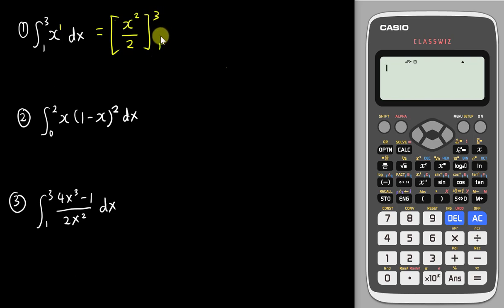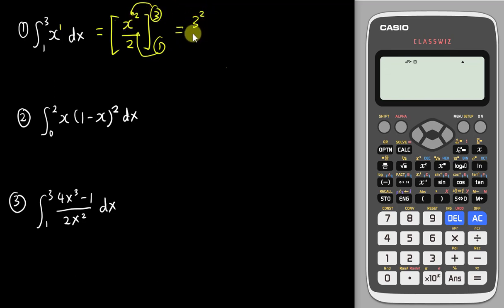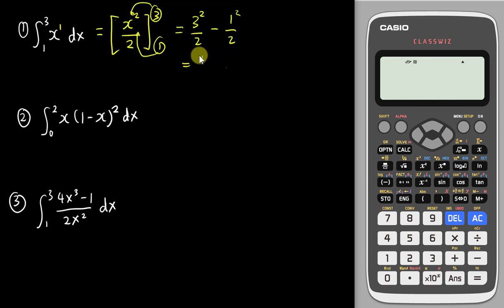The 1 and 3 are the limits, so you plug in 3 into x and minus plug in 1 into x. Substituting gives three squared over two minus one squared over two, which is nine over two minus one over two, equals eight over two, which is four.